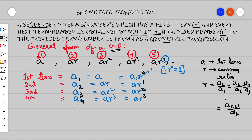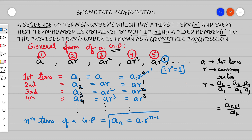Looking into this symmetry, we can write the nth term of a geometric progression. The nth term, represented as aₙ, is equal to a·rⁿ⁻¹. This is also known as the general term of a GP. So the general form is a, ar, ar², ar³, ar⁴, ... but the general term — meaning the nth term — is aₙ = a·rⁿ⁻¹.